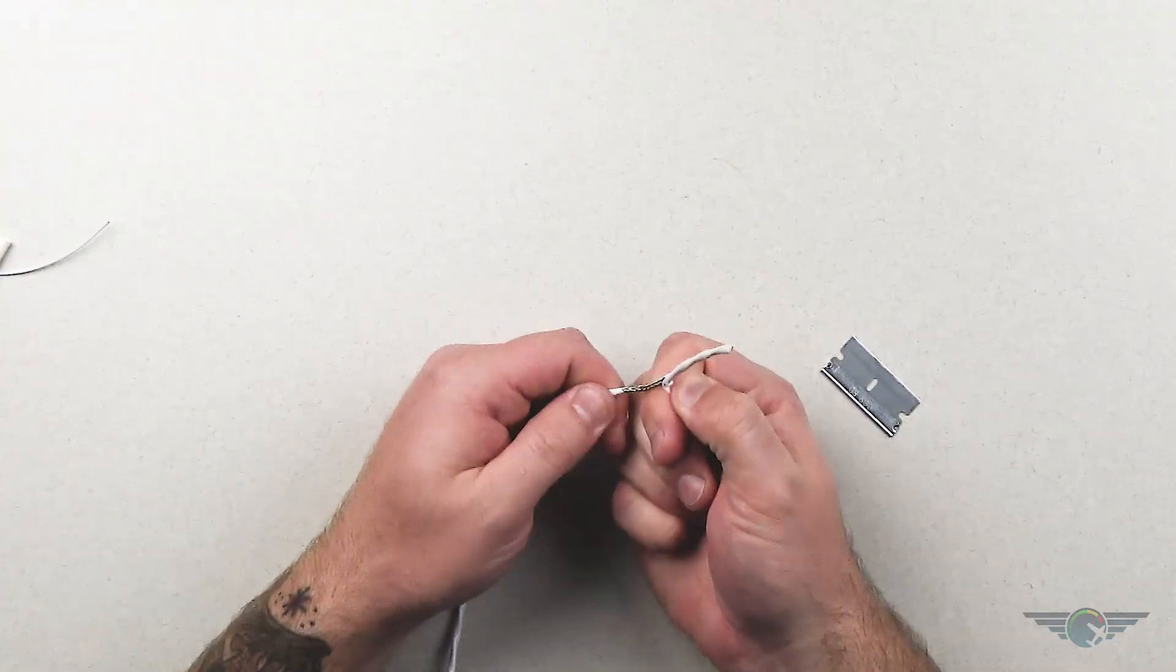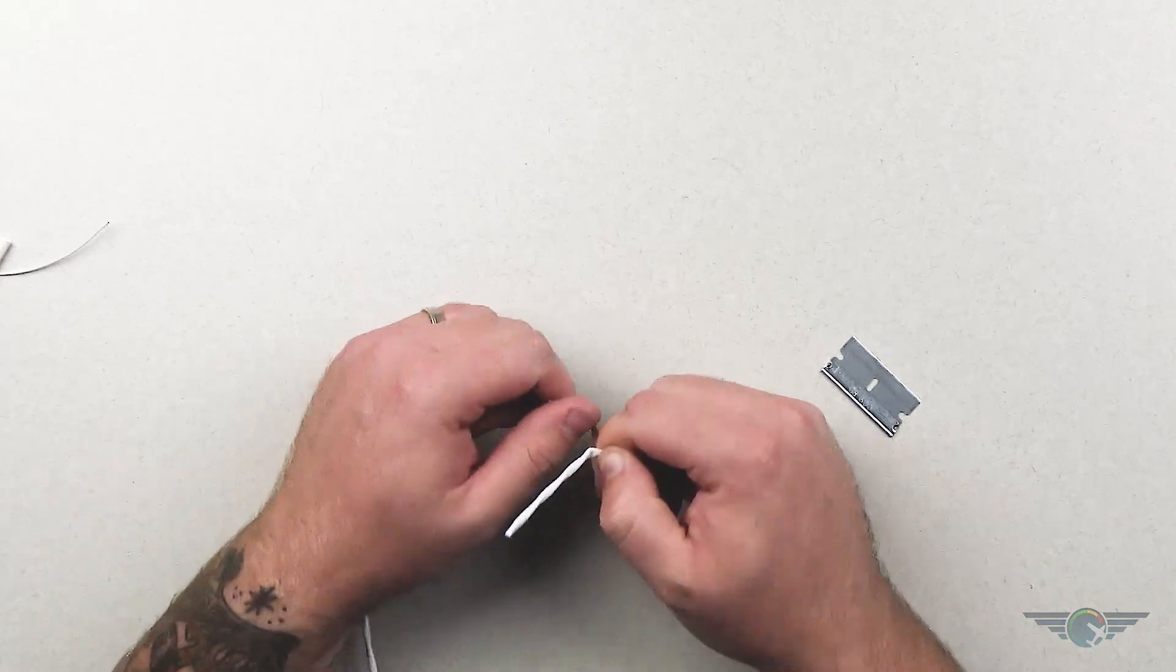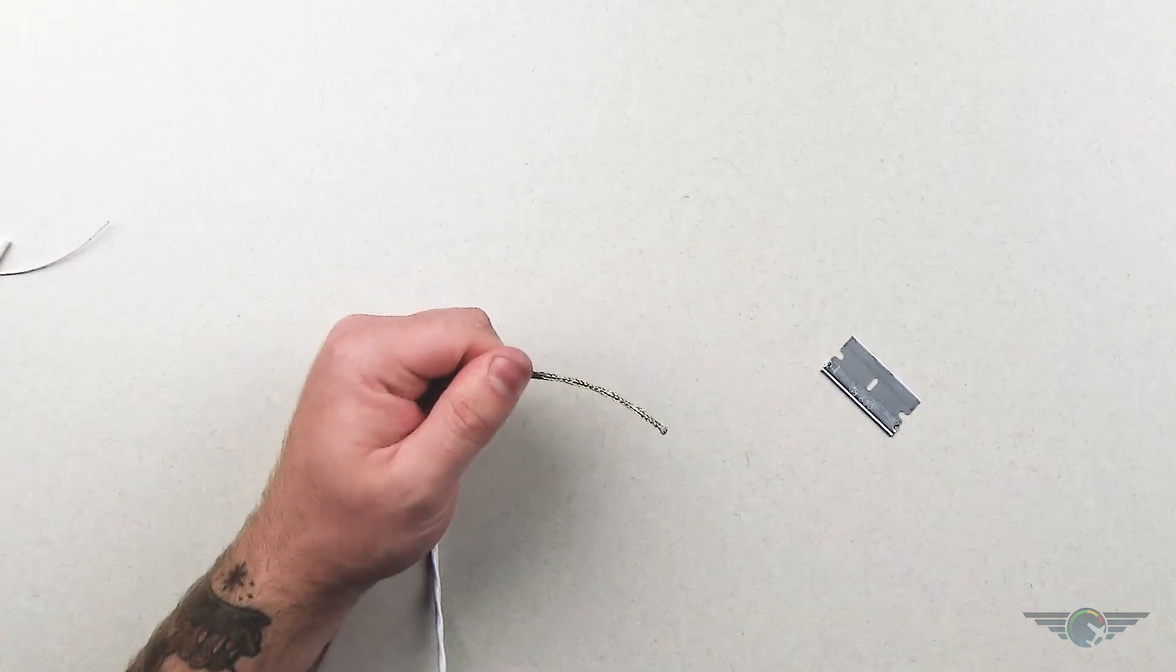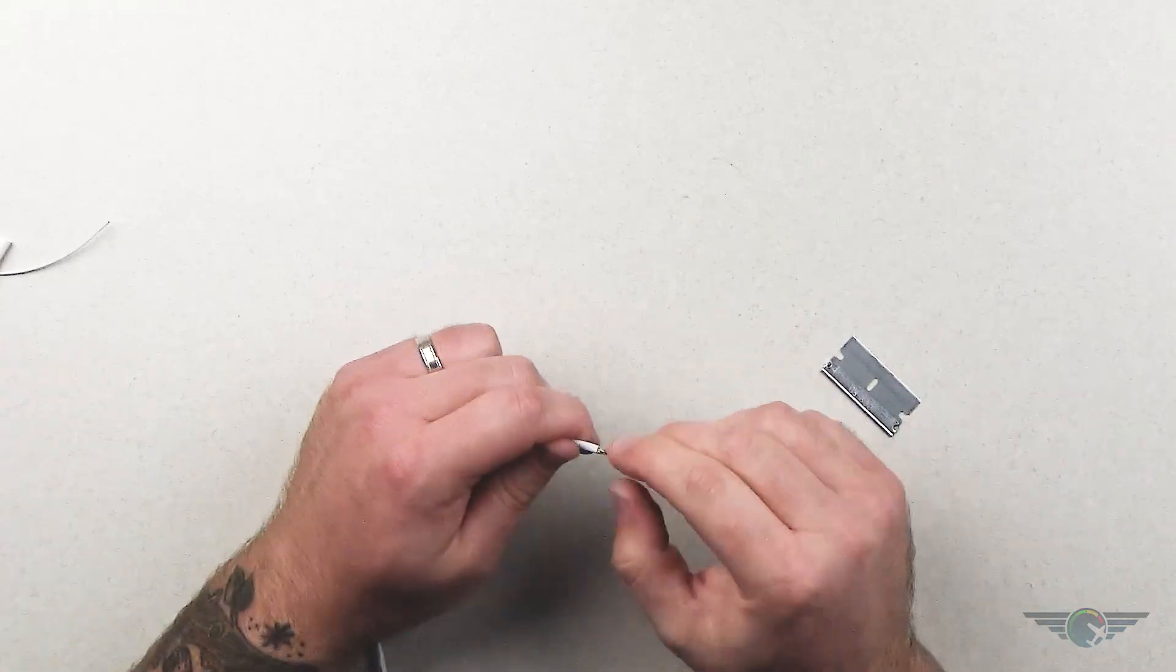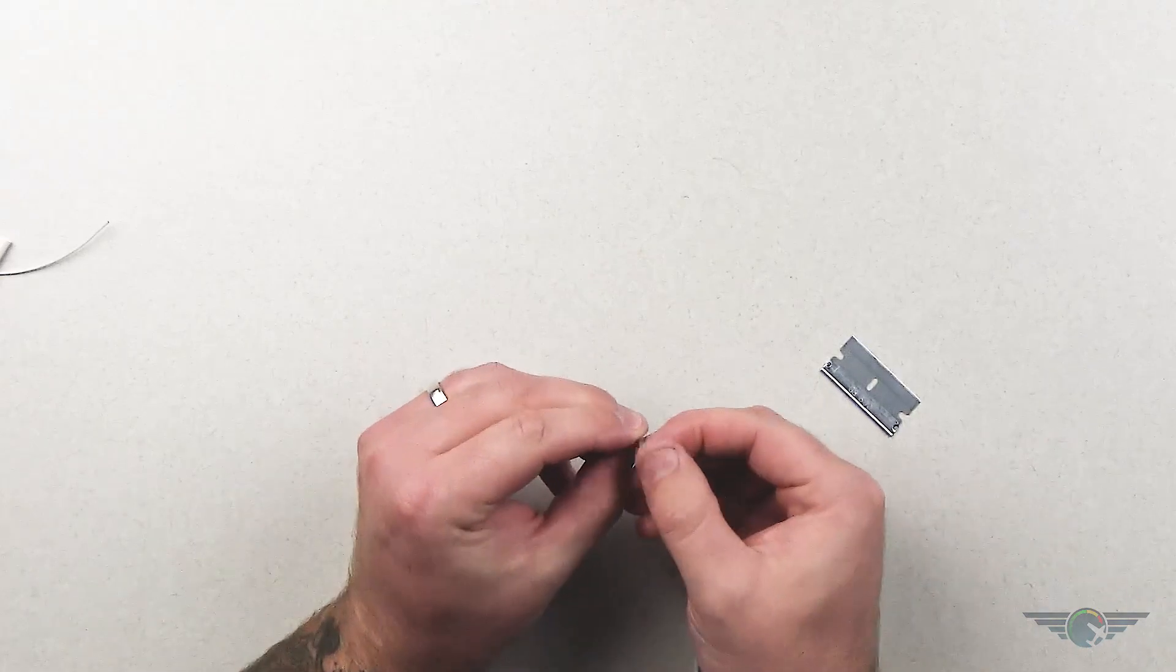And once you get a piece of it, just grab a hold of it and grab a hold of your wire that you're stripping out there, and then one swift motion comes apart. So now, we have the shield exposed, right? Well, our conductors are here. That's our CAN bus high and low.